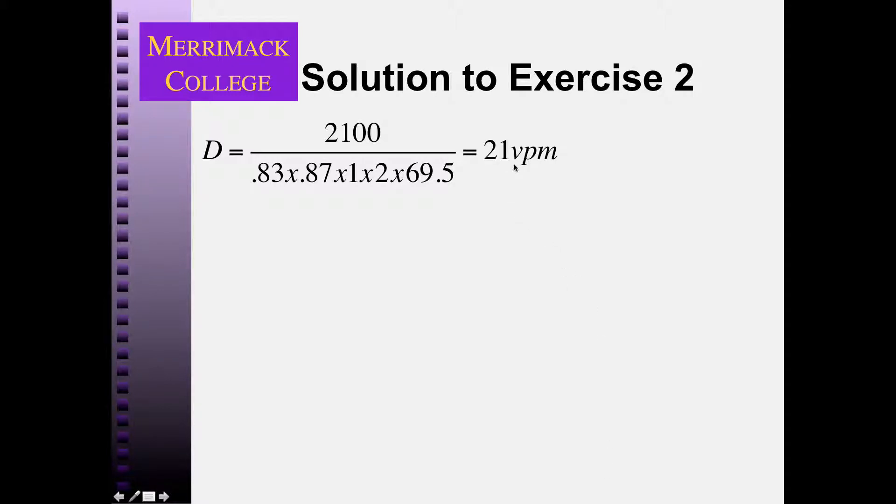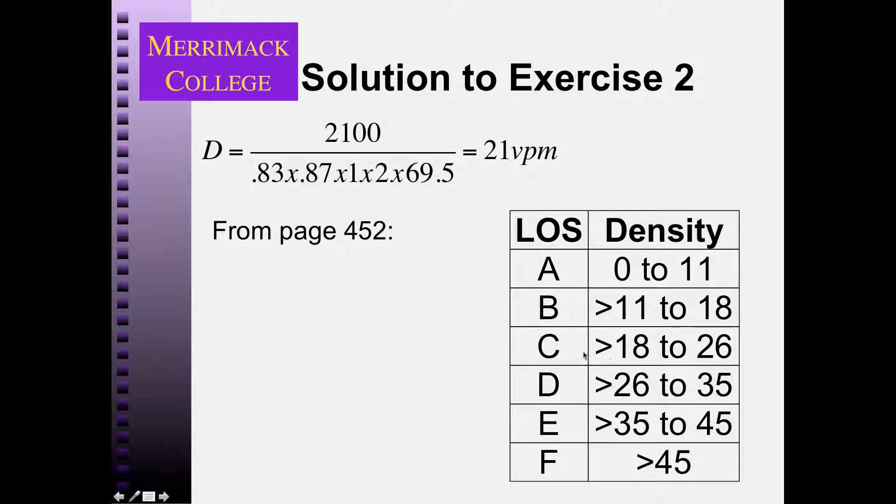So 21 vehicles per mile. If we look in that same table, again, it's still in that same category, so it's still level of service C.